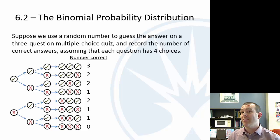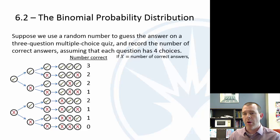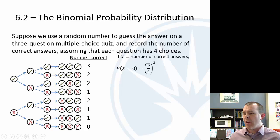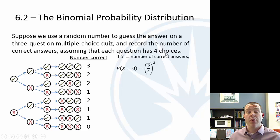You may notice similarity to the heads and tails example, but the outcomes are not equally likely here — getting right and wrong is not equally likely. For x=0, the probability is (3/4)^3, since the probability of getting each question wrong is 3/4 and the three questions are independent.